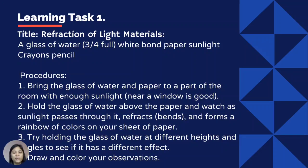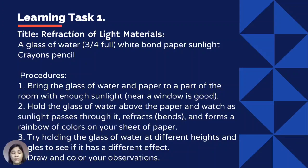Procedures: Bring the glass of water to a part of the room with enough sunlight, or near a window. Hold the glass of water above the paper and watch as sunlight passes through it — it refracts or bends and forms a rainbow of colors on your sheet of paper. Try holding the glass of water at different heights and angles to see if it has a different effect. Then draw and color your observations.